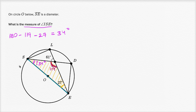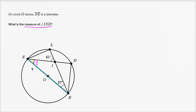Now I mentioned there are multiple ways we could figure this out. Let me do it one more way. ISE is still the thing we want to figure out. Another way we could approach it is — we know we have some inscribed angles on this circle, and we know that if an inscribed angle intercepts the diameter, then it's going to be a right angle — a 90 degree angle. So this angle right over here is a 90 degree angle, and we can use that information to figure out this angle.